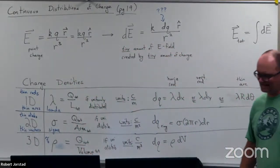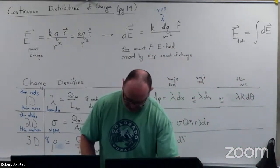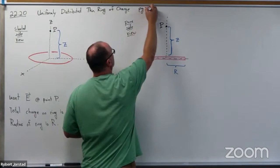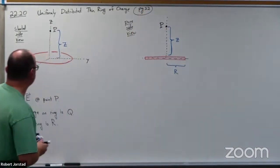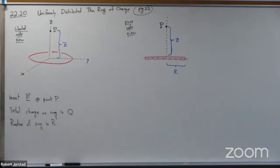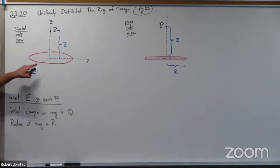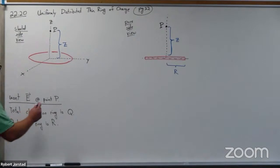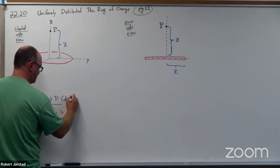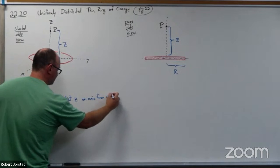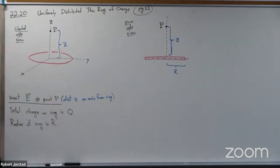We're looking at problem 22.20 on page 22. For this problem, I don't want the electric field at the origin — I want to get the electric field at point P. I'm assuming this ring is symmetric, and we're looking at some point on axis, at distance z on axis from the ring.